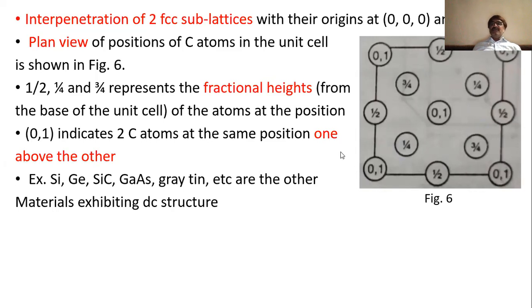The diamond cubic structure is also observed in other materials like silicon and germanium (semiconductors), silicon carbide, gallium arsenide, and gray tin.